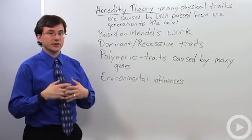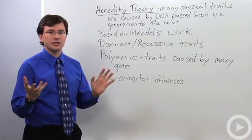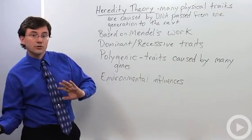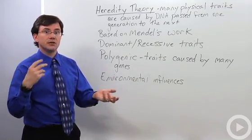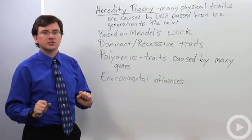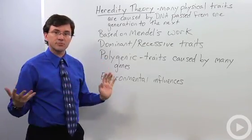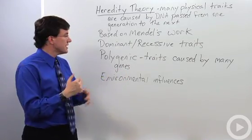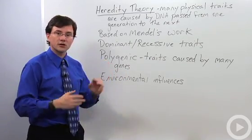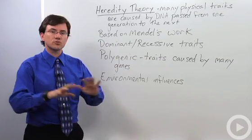Now since Mendel's time we've discovered it's a lot more complicated than he initially thought. There's things like co-dominance where one gene may share its dominance with another gene. But one of the more complex things that helps us better understand the world is that we've learned that some traits are not controlled by one gene, they're controlled by many genes.